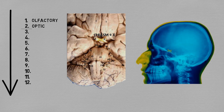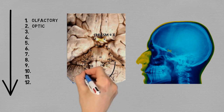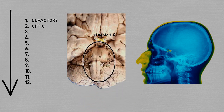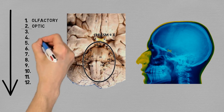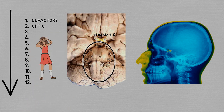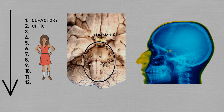The remaining 10 pairs leave the CNS from the brainstem. Trying to memorize the exiting points of 10 different structures in such tight real estate seems a little bit of a strain, but you'll see that if we divide them up, it actually becomes quite easy.